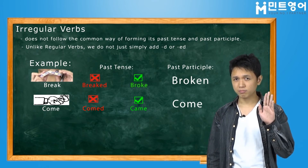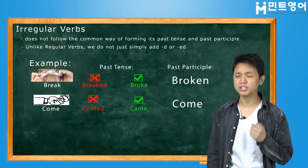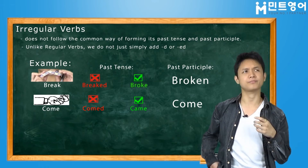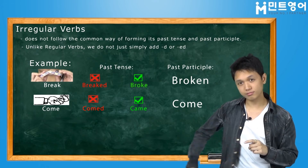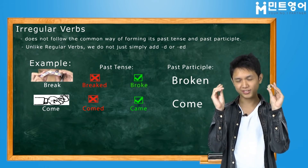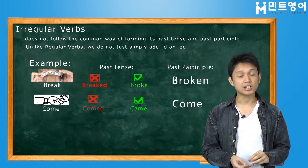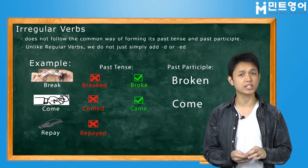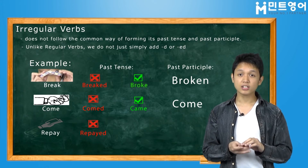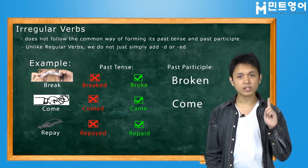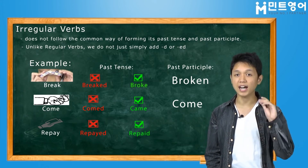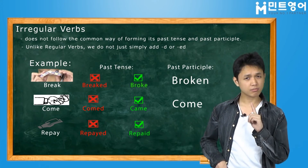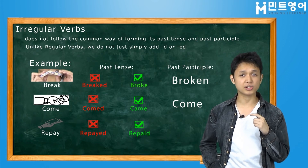Maybe you're seeing the pattern now. But let me give you just one more example. The next word is "repaid." Its past tense is "repaid," but it's not spelled with an "-ed." Instead, you spell it R-E-P-A-I-D. As you can see, the spelling changes. But its past participle is also the same.